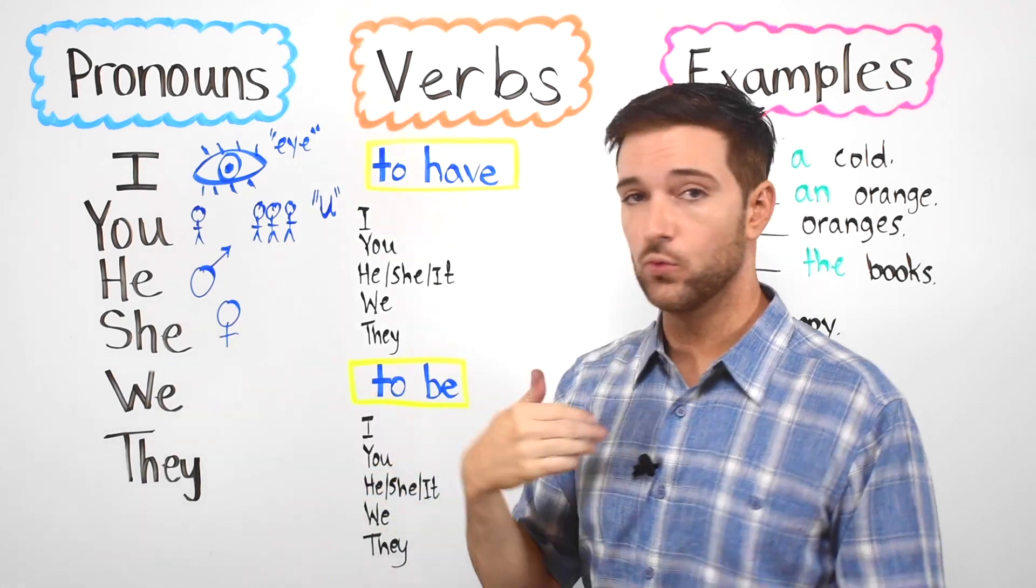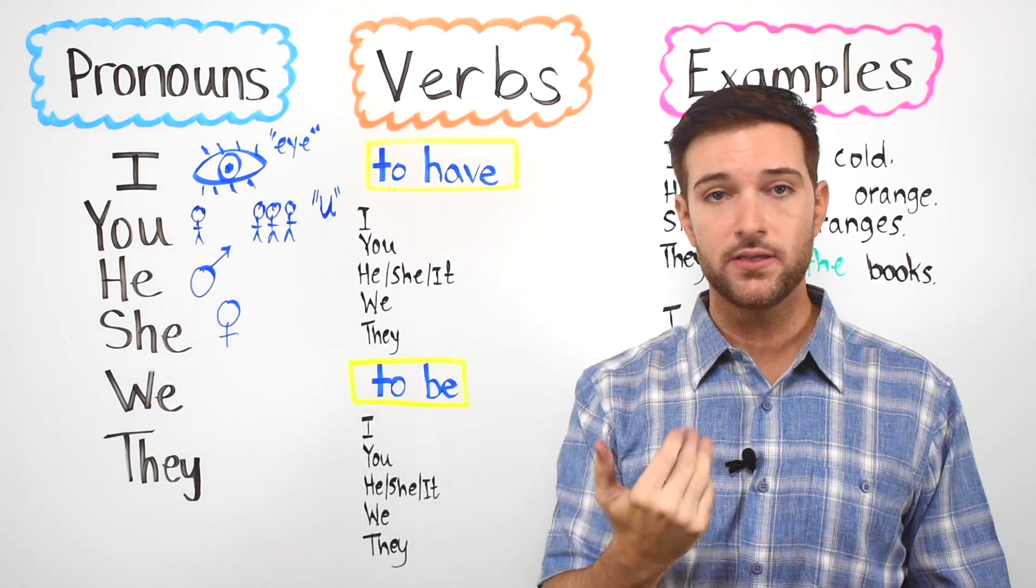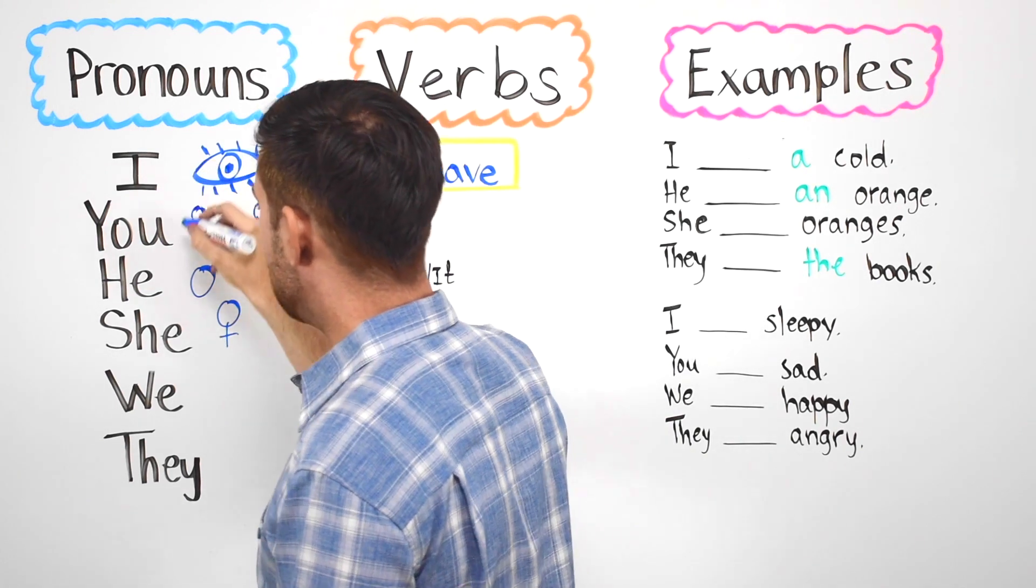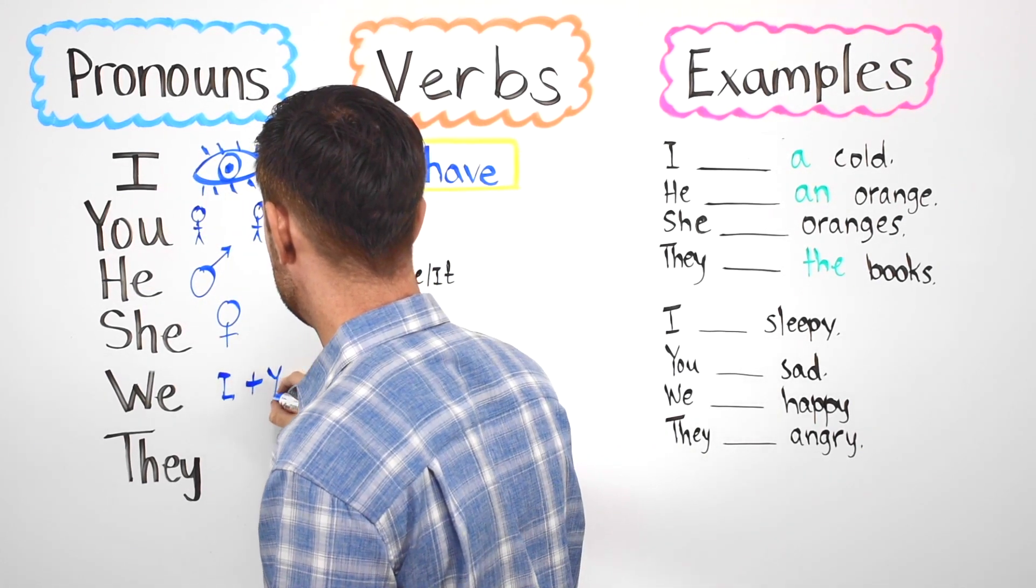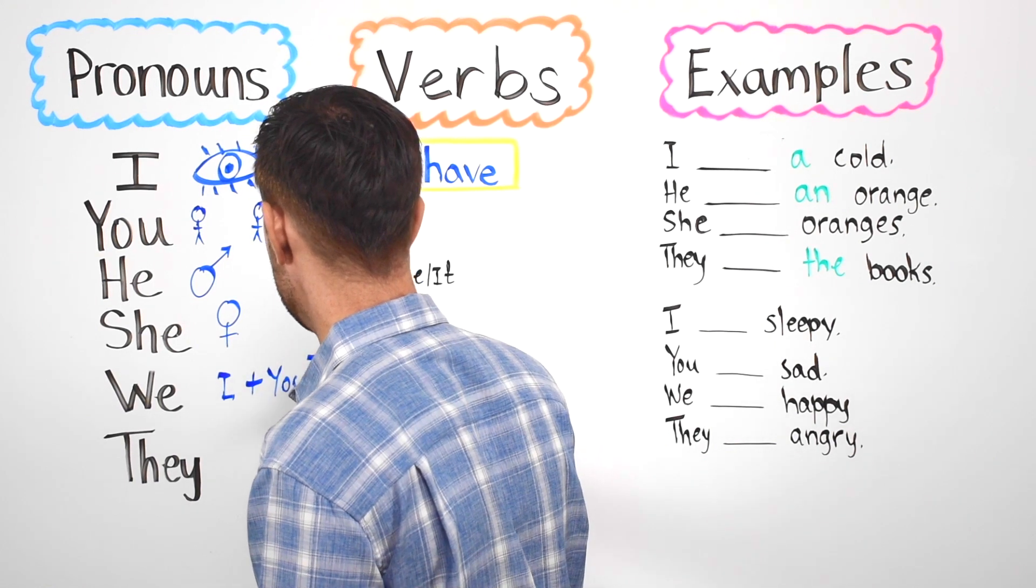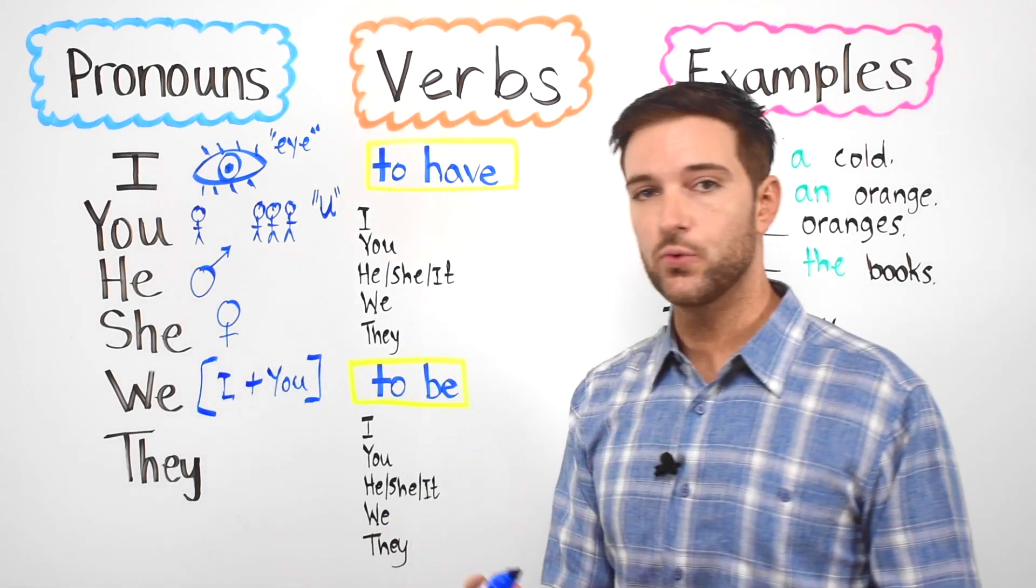Next we have we. We is basically I and you together. So I plus you, and that's we.